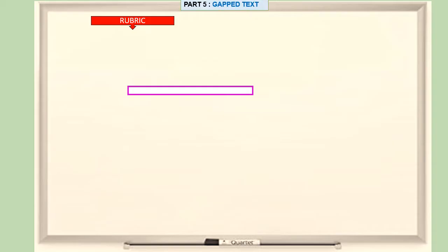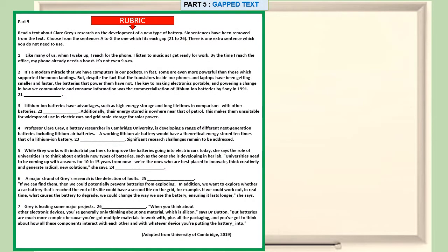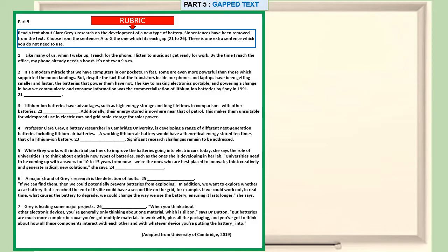Before we look at the first question, question 21, remember — before you start answering the questions in part five, please read the rubrics carefully. The instruction says: read a text about Claire Gray's research on the development of a new type of battery. Six sentences have been removed from the text. Choose from sentences A to G the one which fits each gap, questions 21 to 26.